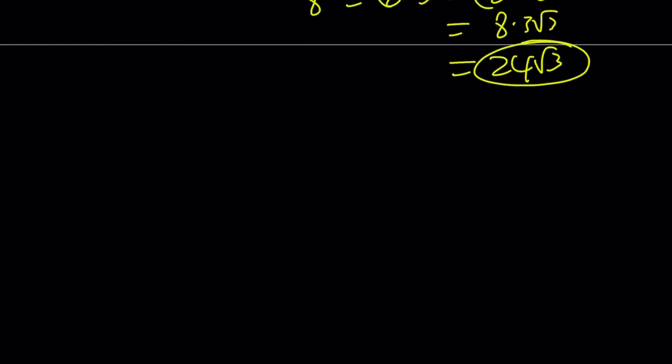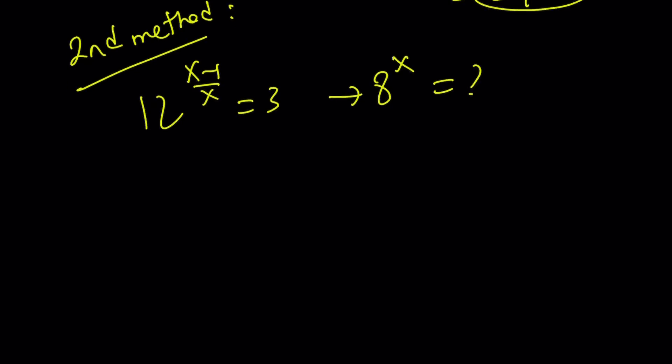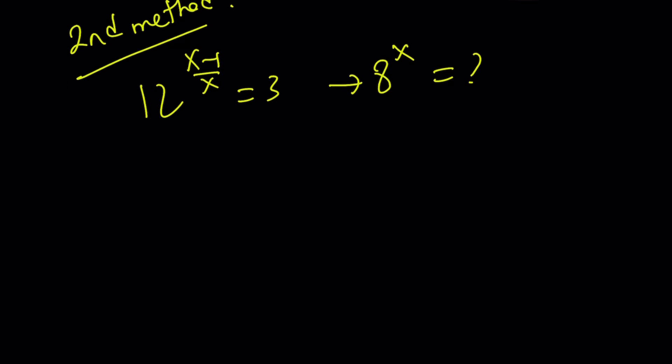That brings us to the end of the first method and the beginning of the second method. For the second method, we're going to start with the original problem and our goal is to find 8 to the power x. I'm going to raise both sides to the power x. These two x's are going to cancel out, which is what's nice about this. 12 to the power x minus 1 equals 3 to the power x.